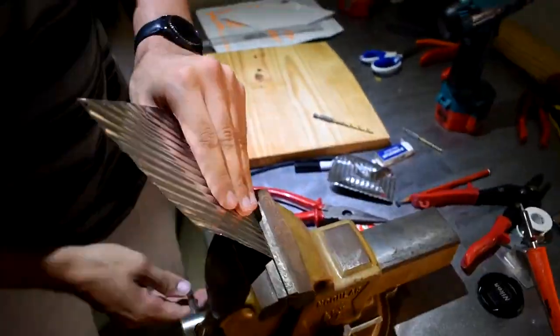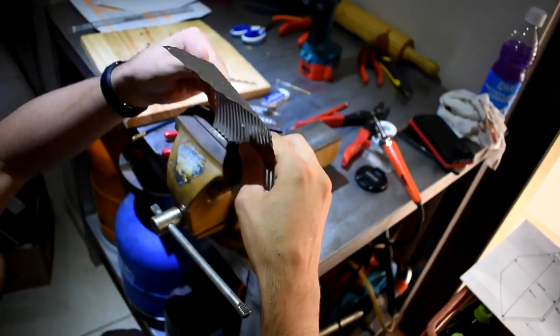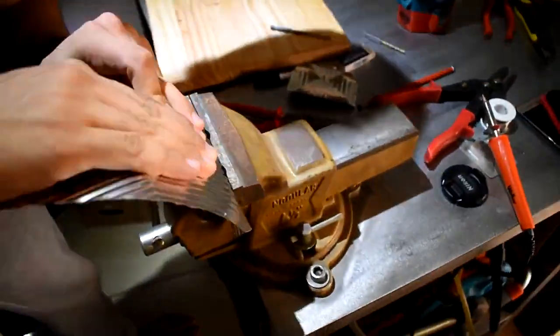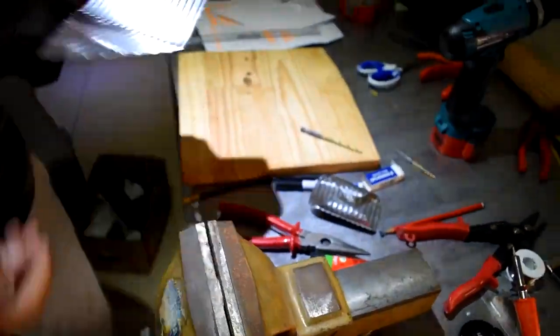You are now ready to start bending your antenna template into the correct shape. The spines of the metal sheet make folding the antenna template into the correct shape increasingly difficult. Therefore, a vise should be used.